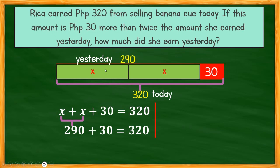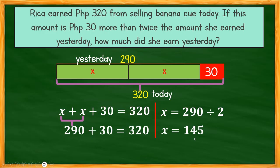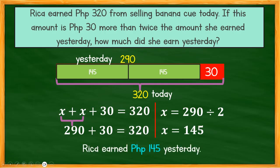Dividing 290 by 2 gives 145. So Rika's earnings yesterday were 145 pesos. For today: 145 plus 30 equals 175 pesos. Therefore, Rika earned 145 pesos yesterday.